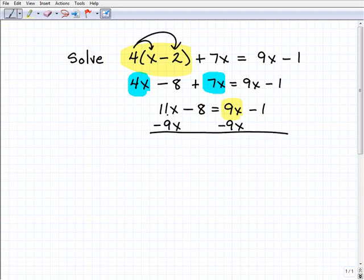I'm going to add down: 11x plus negative 9x is 2x, and negative 8 plus nothing is negative 8. You can see the 9x's go away on the right-hand side—that's exactly what I wanted to happen. And I've got negative 1 plus nothing is negative 1.